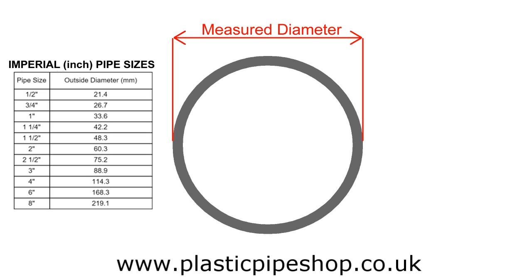When measuring your pipe, you need to use the outside diameter of the pipe — the measured diameter — in millimetres. For example, a one-inch pipe has an outside diameter of 33.6 millimetres. A two-inch pipe measures 60.3 millimetres.